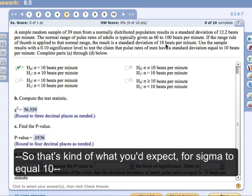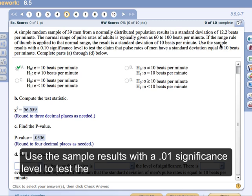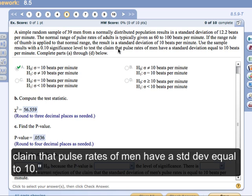So that's kind of what you would expect is for sigma to equal 10. Use the sample results with a 0.10 significance level to test the claim that pulse rates of men have a standard deviation equal to 10.